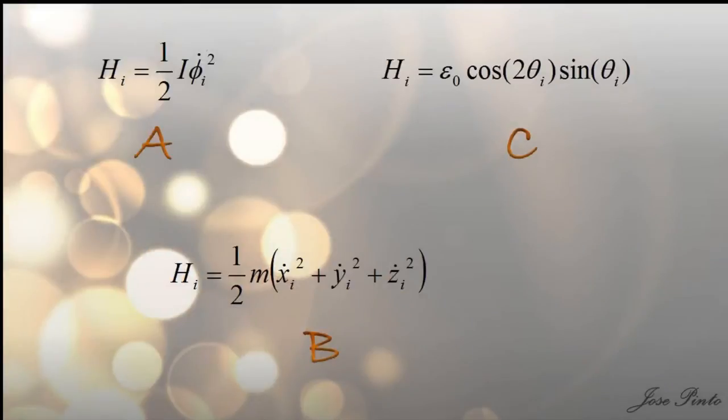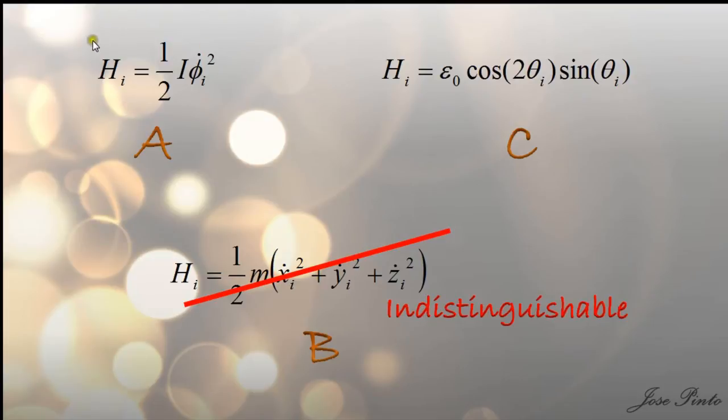Now let's go back and see the Hamiltonians. So this one we already know is indistinguishable. Now take a look at this one. These are free to rotate. But the point of rotation is not free to move. So it's fixed in space.